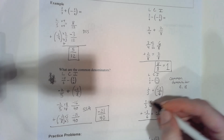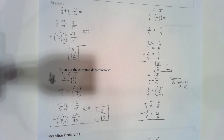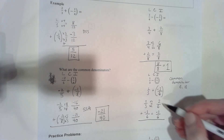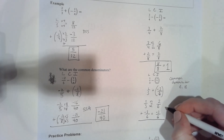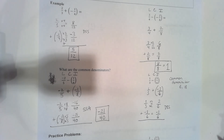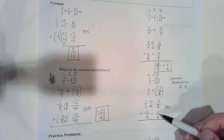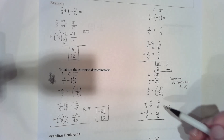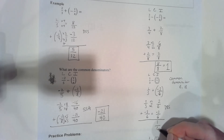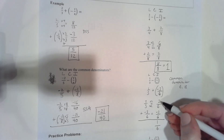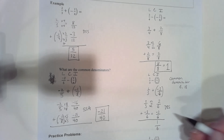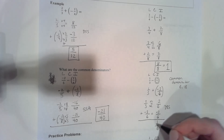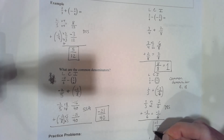One times two makes two. Now I look at my addition problem: different signs means subtract. Three minus two gives me one over six. The answer will be negative because three has the larger value and it's negative.